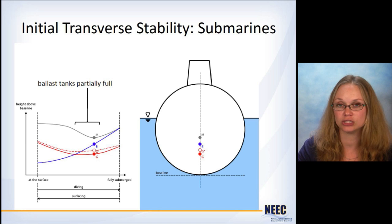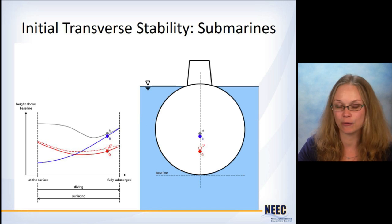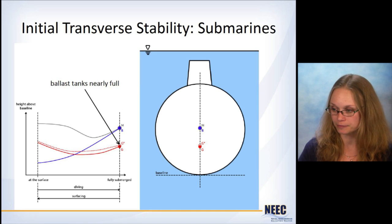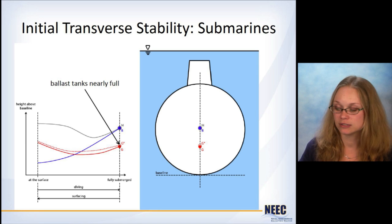With the change in the underwater geometry, M has dropped. Now B is starting to track upwards. G and G double prime are down low. Now we're coming closer and closer to being at depth here. And then finally here we are at operating depth. M and B coincide. You've got G and G double prime are now below the center of buoyancy. The ballast tanks are now nearly full, which means that we've got a reduced free surface effect again. So the G double prime and G are closer together now.